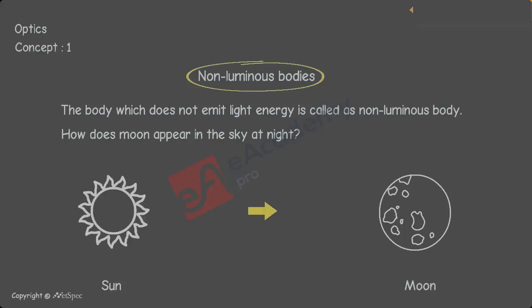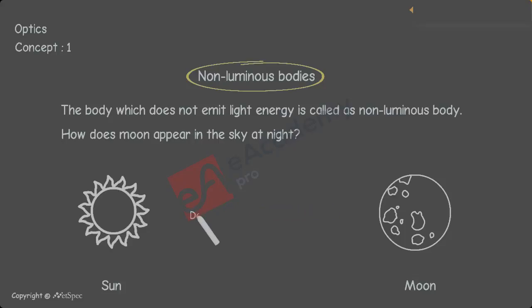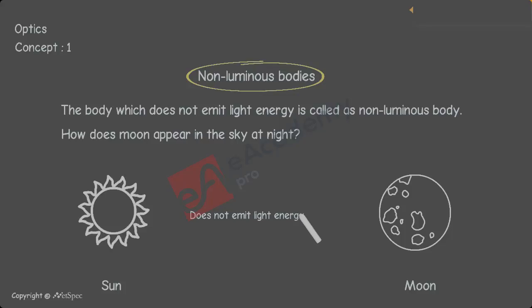The Moon does not emit light energy on its own — it absorbs light energy from the Sun and then emits it. So, non-luminous bodies are the bodies which do not emit light energy on their own. The best example is the Moon.